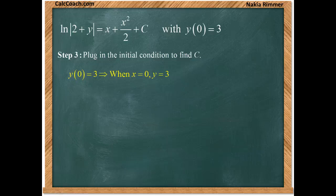Plug in 0 for x, makes the right-hand side 0 + 0 + C. Plug in 3 for y, makes the left-hand side ln(5). So that's what C is. The natural log of 5.